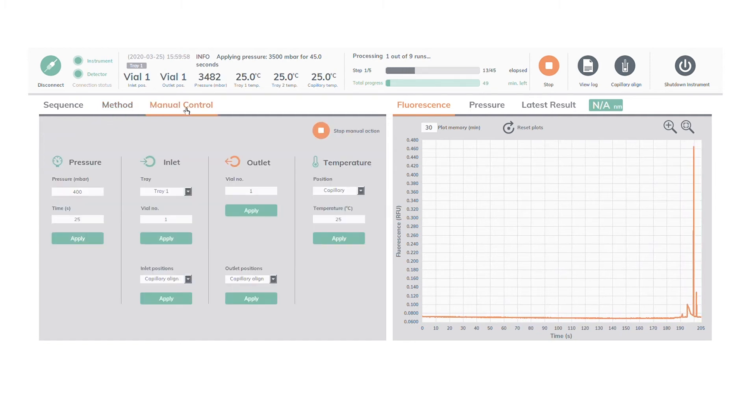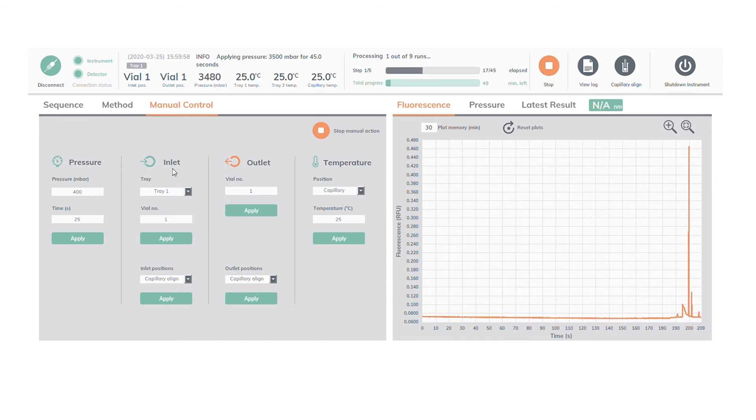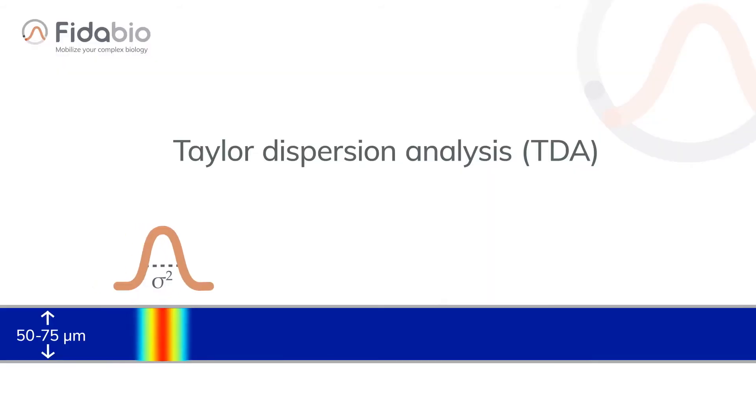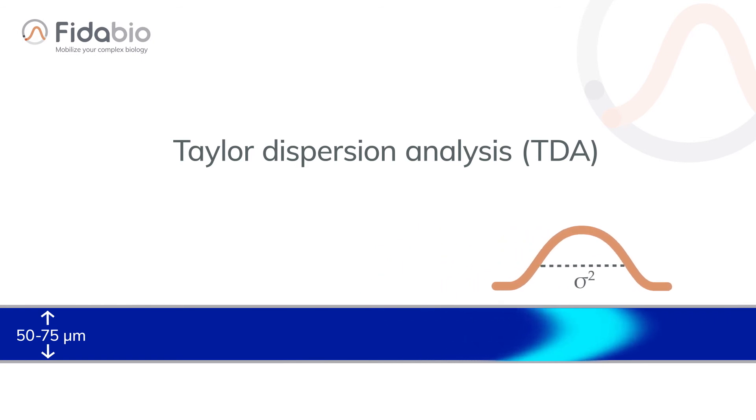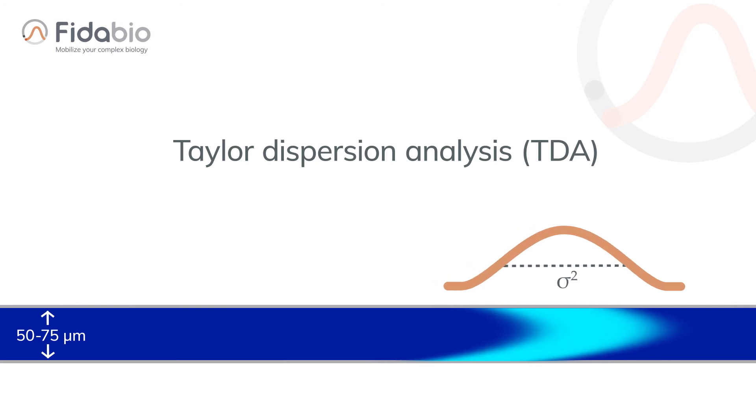The feeder principle is based on a pressure during flow in a microfluidic channel. The shape of the signal is determined both by the pressure that you apply to the channel, but also by the diffusivity of the system you are looking at. Small molecules diffuse fast, large molecules diffuse slow. We extract the diffusivity and convert it to a size. This is how the feeder principle works.